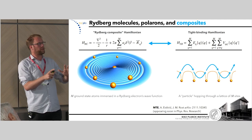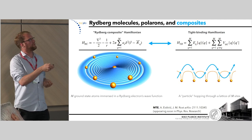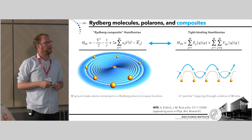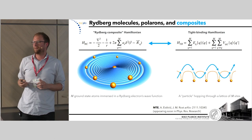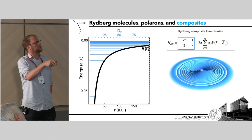Now we change gears dramatically to talk about Rydberg composites. We go from a simple electronic state to a complicated electronic state, getting rid of the many-body BEC physics and considering our ground state atoms as held in place within the Rydberg orbit. I'd like to convince you that one can take this Rydberg composite Hamiltonian — the Rydberg atom plus all these Fermi pseudopotentials at all the ground state atom positions — and map it directly to a tight-binding Hamiltonian, thereby studying a thermodynamic limit using a single Rydberg atom perturbed by ground state atoms.